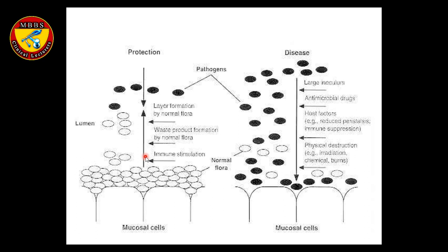This picture depicts the importance of normal flora. The white ovals represent normal flora, which prevent pathogenic bacteria — the black ovals — from invading the mucosal cells or skin. But when normal flora is disrupted by various factors, pathogens come and reside on the mucosal surface.